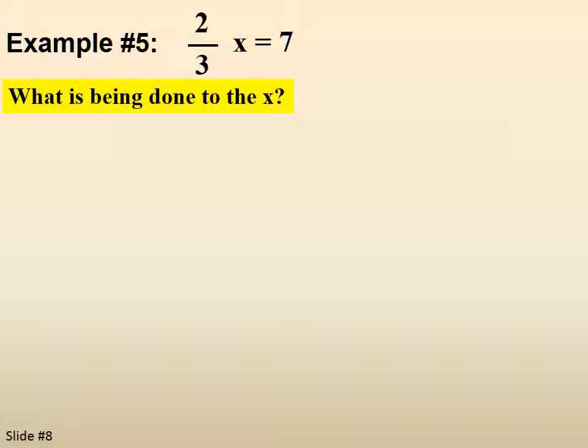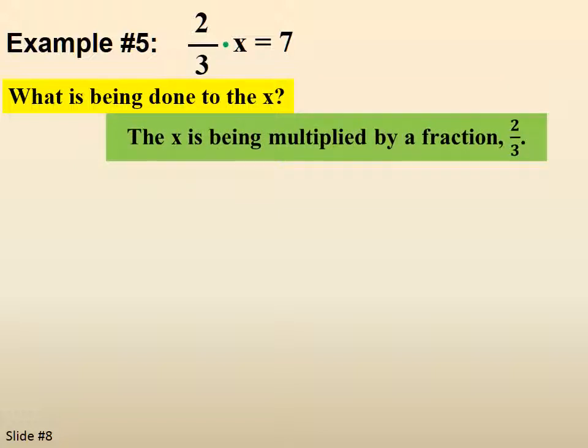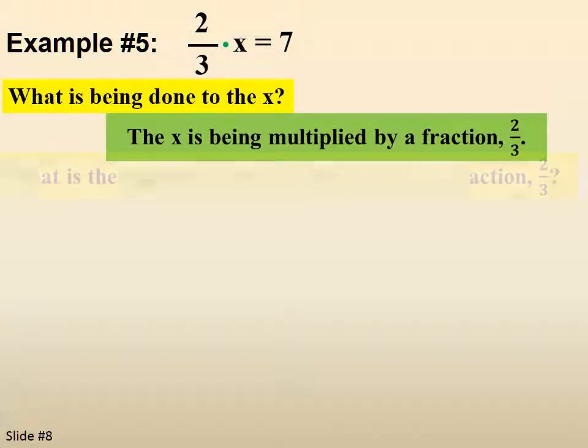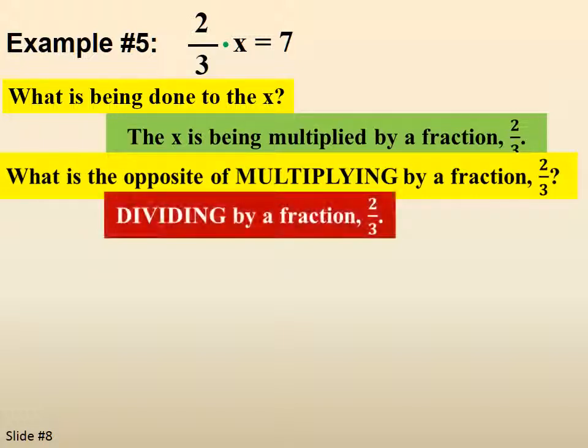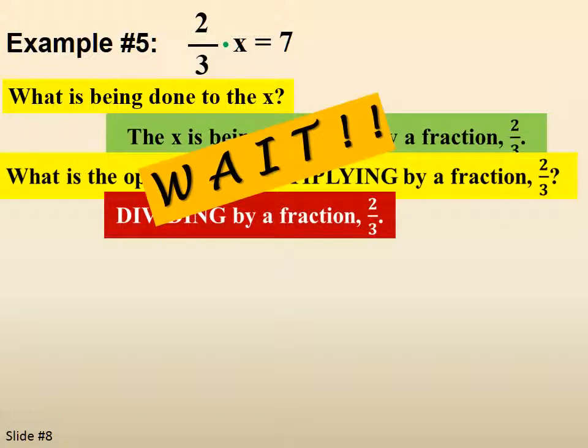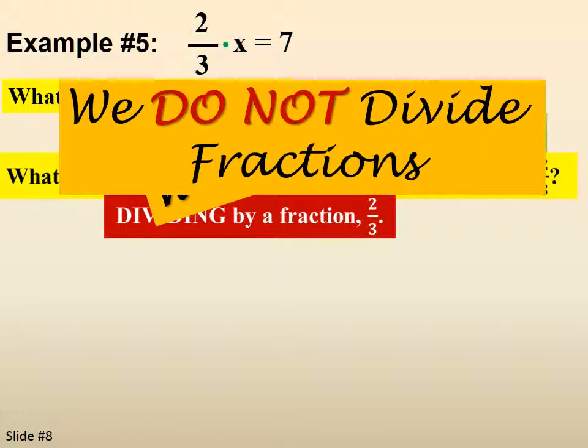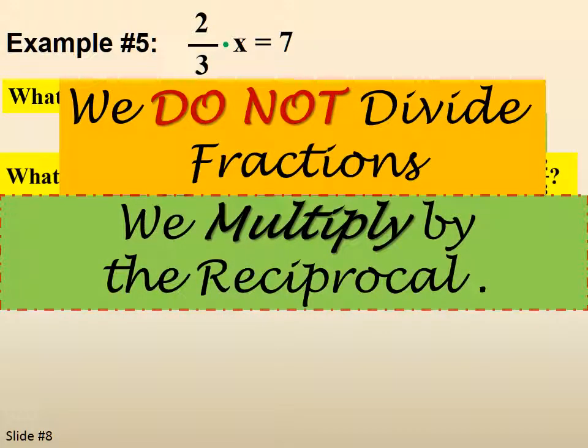2 thirds x equals 7. So what's being done to the x? x is being multiplied by a fraction which happens to be 2 thirds. What's the opposite of multiplying by a fraction 2 thirds? Dividing by a fraction 2 thirds. Wait. We don't divide fractions. We multiply by the reciprocal. Let's start this one again.